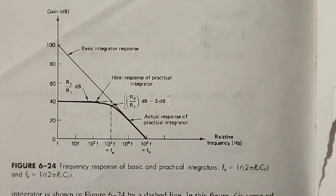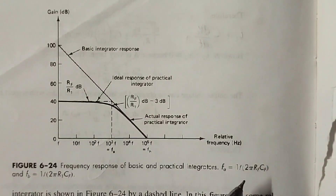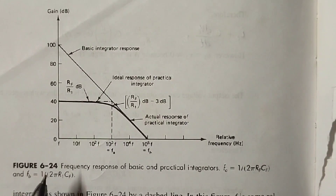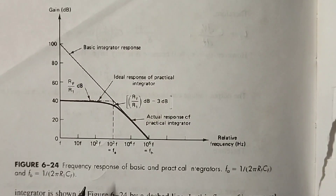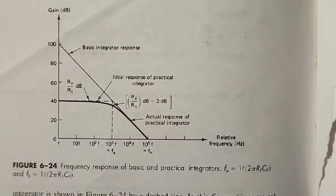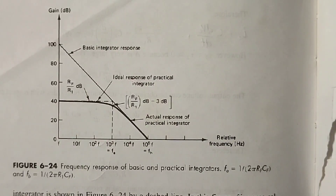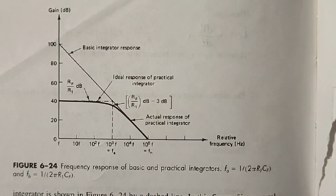We can calculate the theoretical values of FA and FB using the formulas: FA is equal to 1 by 2π·RF·CF, and FB is equal to 1 by 2π·R1·CF. The experimental values are obtained from the frequency response curve. Observe the graph closely and find the difference in frequency responses of the basic integrator, ideal practical integrator, and actual practical integrator. We hope you have followed the experiment — thank you.